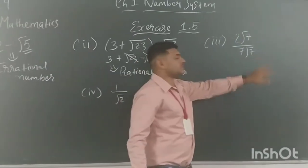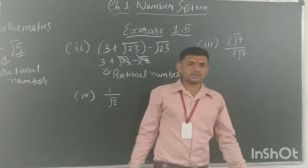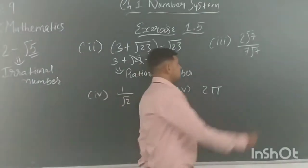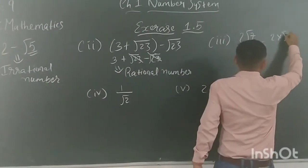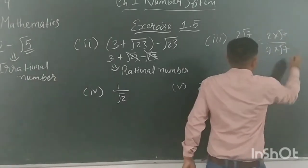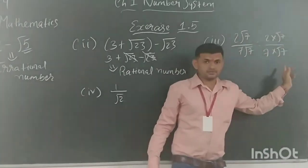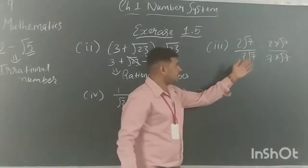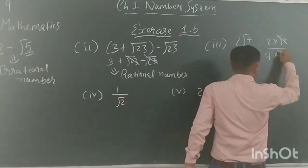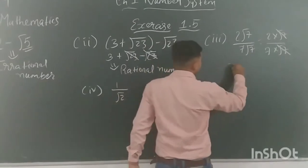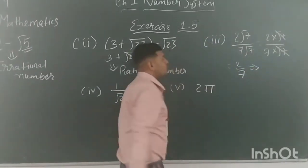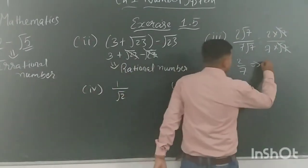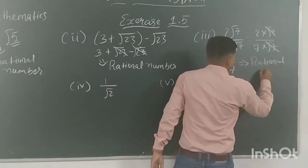Number 3: 2 root 7 upon 7 root 7. As I said, the operation can be carried out further. We have 2 into root 7 upon 7 into root 7. Root 7 appears in both numerator and denominator, so we eliminate them. What remains is 2 upon 7, which is in p-by-q form with q not equal to zero — so it is a rational number.